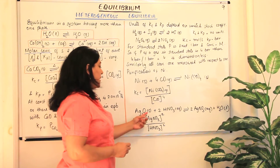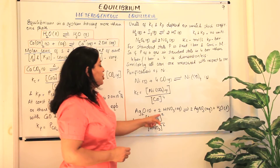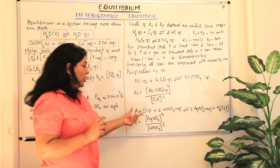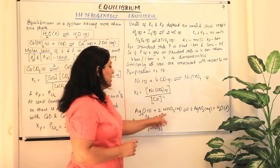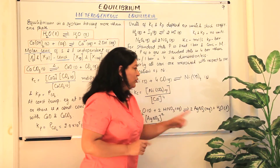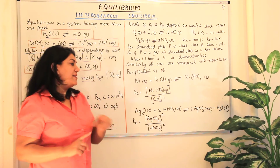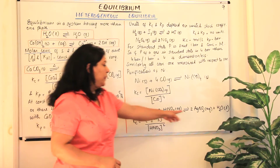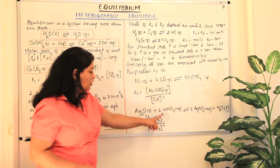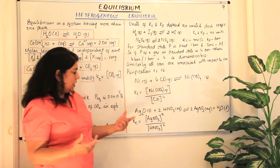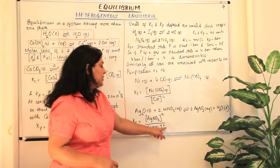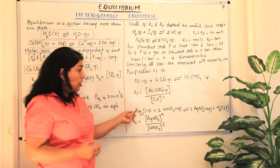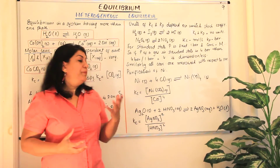The last example: silver oxide solid reacts with 2 moles of nitric acid aqueous, producing 2 HgNO₃ aqueous plus water liquid. Solid Ag₂O and liquid water are not included in the equilibrium expression. So Kc equals concentration of HgNO₃ aqueous raised to power 2, divided by concentration of HNO₃ aqueous raised to power 2. We ignore Ag₂O because it is a solid and water because it is a pure liquid.